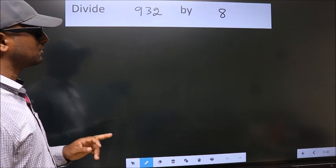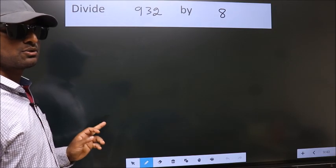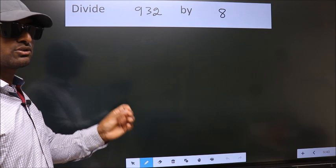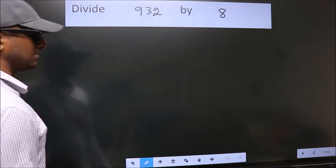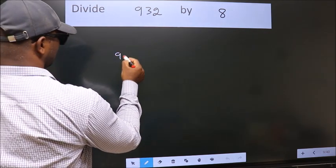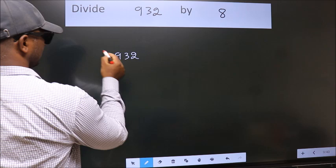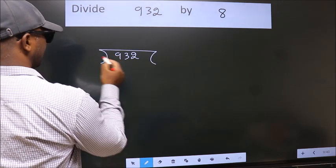Divide 932 by 8. To do this division, we should frame it in this way. 932 here, 8 here.